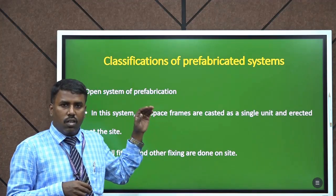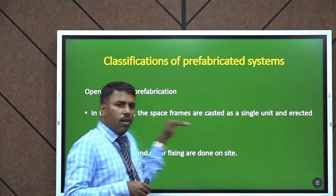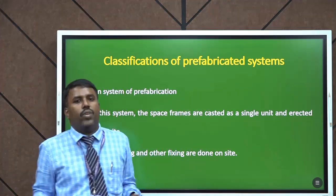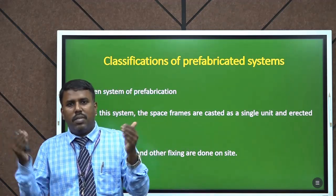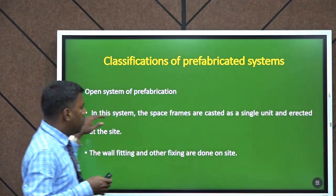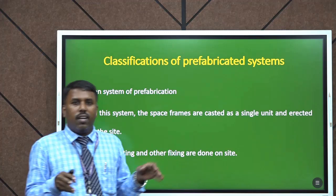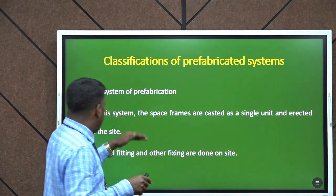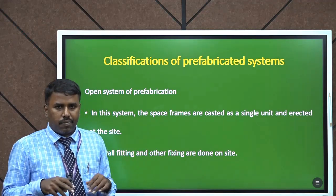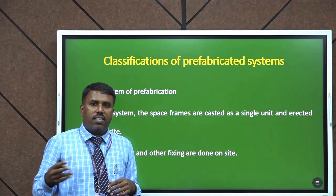The next one is open system prefabrication. Here the space frames are cast as a single unit, and all other building elements will be assembled at the site. The frame is cast as a single unit, erected at the site, and all other construction elements will be fixed. Wall fittings and other fixings are done at the site.